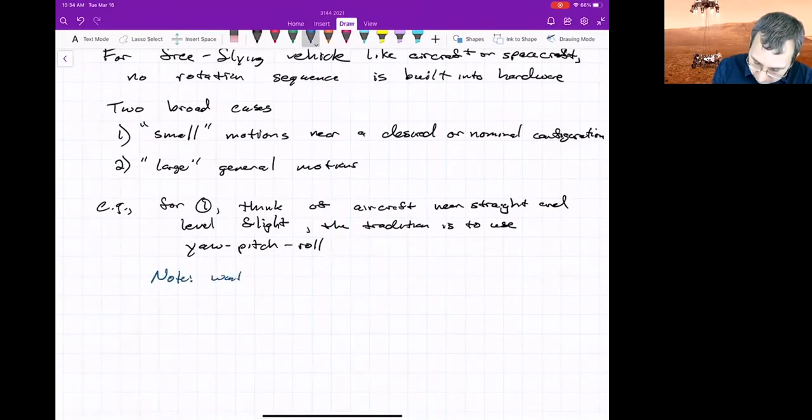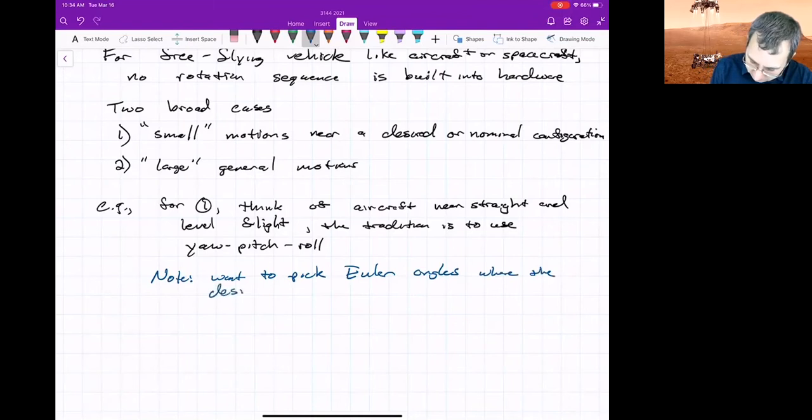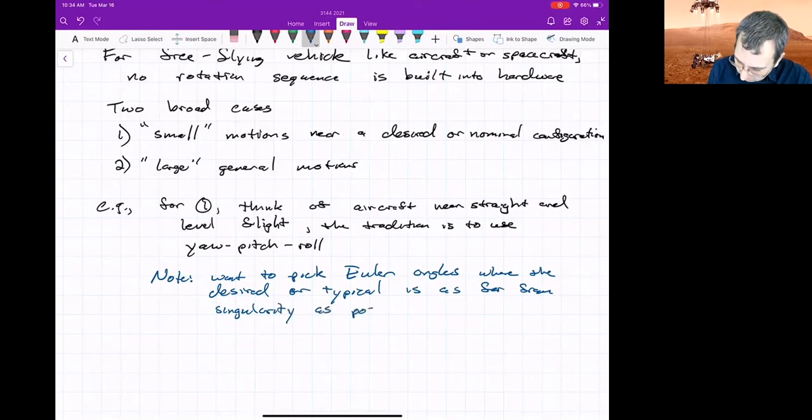I'm sort of focusing on the Euler angles for number one, but really anything would work for number one. Pick Euler angles where the desired or typical motion is as far from the singularity as possible, because you'll have inaccuracies as you get close to that singularity.